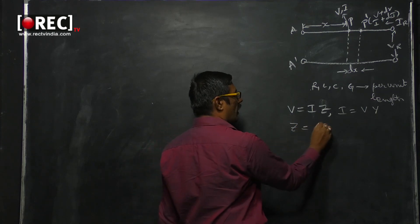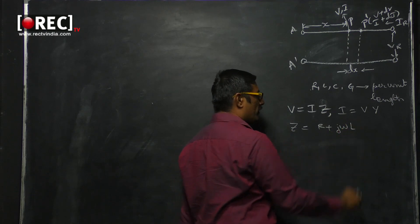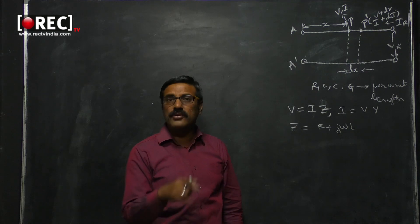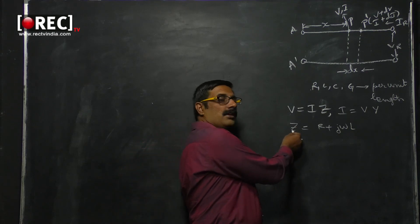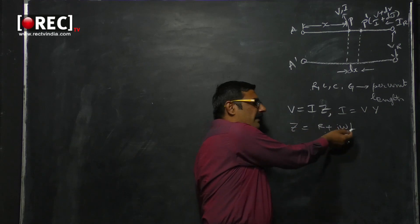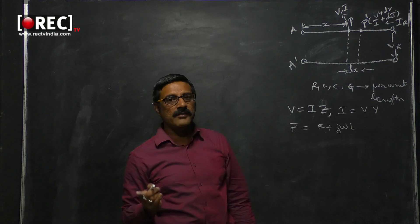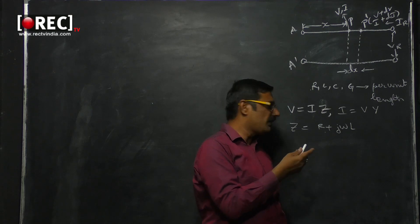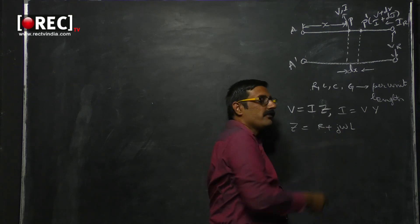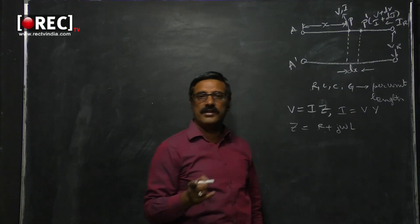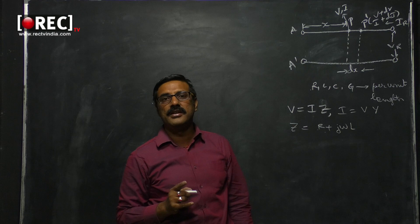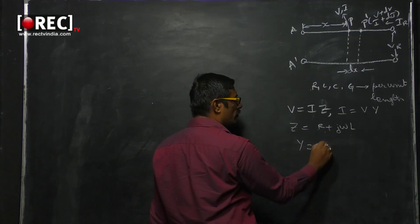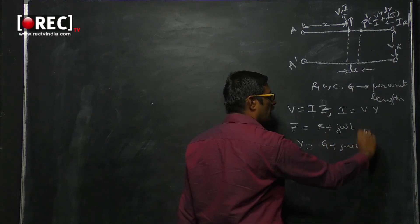We can write the series impedance Z as R plus jωL, because the resistive part is R and the series reactance is jωL. Similarly, the two shunt elements are G and C, so the shunt admittance of the transmission line from the equivalent circuit of the TL is simply Y equals G plus jωC.